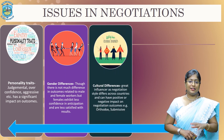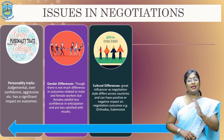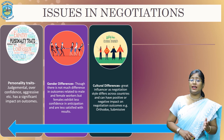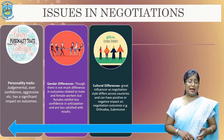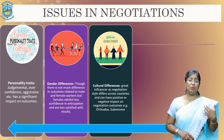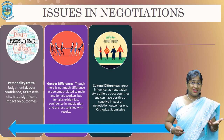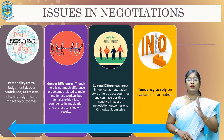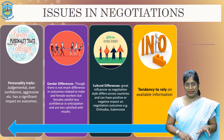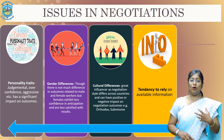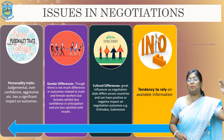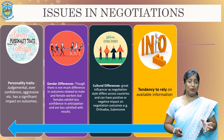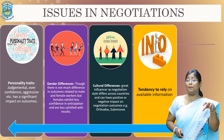The third issue is cultural difference. This is a great influence, as negotiation styles differ across countries and cultures and can have a positive or negative impact on negotiation outcomes. For example, some people or people from some countries can be very submissive, some orthodox or conservative. The next issue is the tendency to rely on available information. All people basically rely upon the information they get, but we do not always know the source. Is the information correct? We may not be sure, but whatever we hear, we tend to rely upon that information.